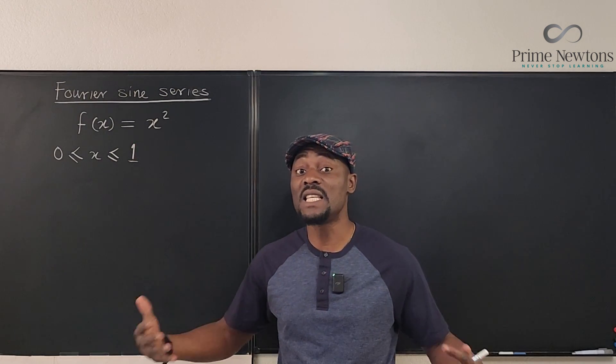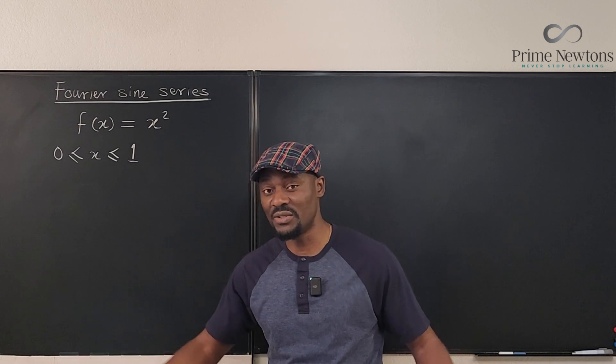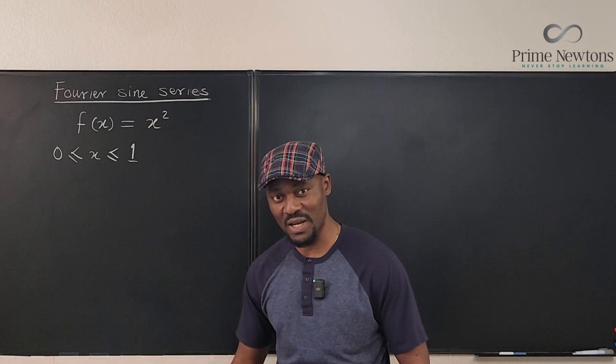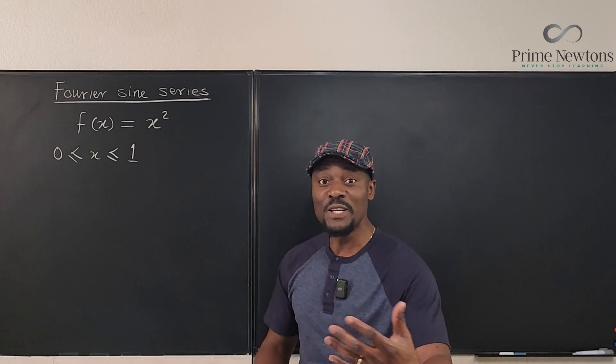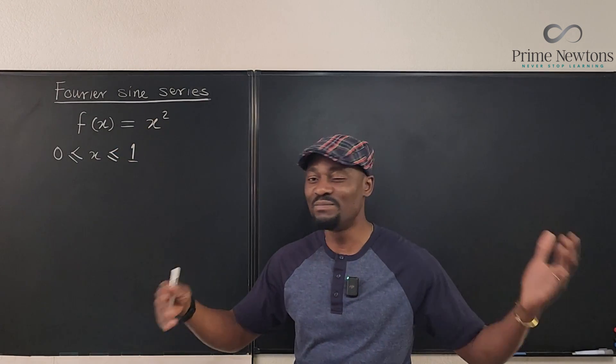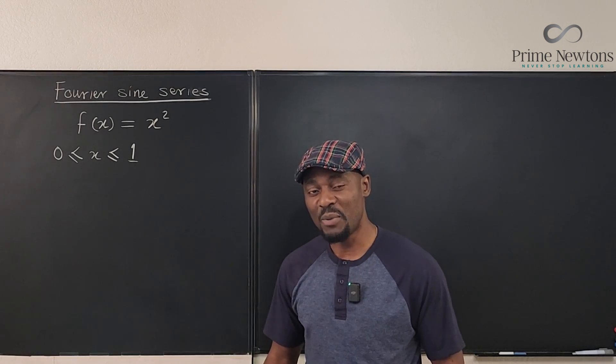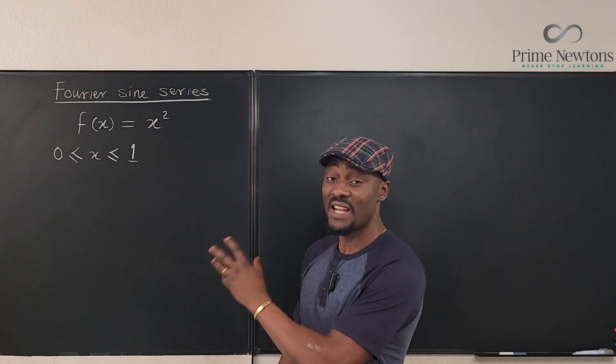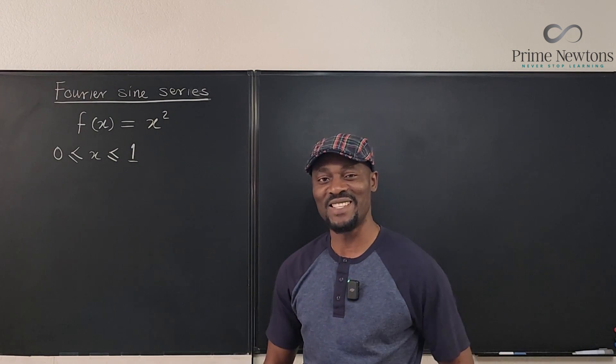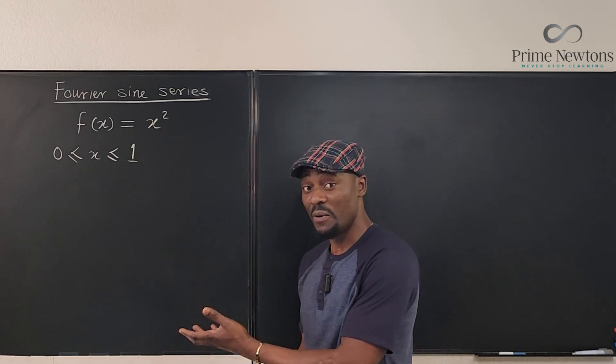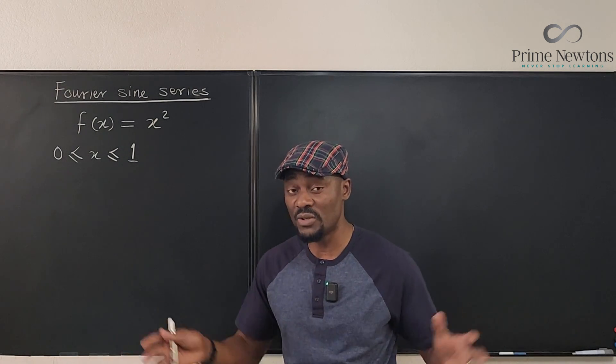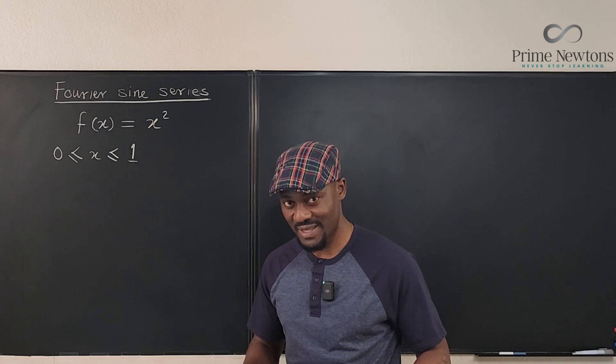Fourier series make our lives easy because you can analyze complicated functions just because you've written them as the sum of terms of sines or cosines. What we're going to do is try to rewrite x squared in terms of a sum of sines and cosines. In this example, I'm just going to stick to the Fourier sine series for f(x) = x². Let's get into the video.